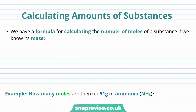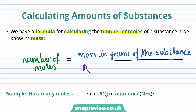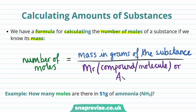The mass of a mole of a substance in grams is equal to the relative atomic mass or relative formula mass of that substance. This gives us a formula for calculating the number of moles of a substance if we know its mass: the number of moles is equal to the mass in grams divided by the relative formula mass (MR value) for a compound or molecule, or the relative atomic mass (AR value) for an element.